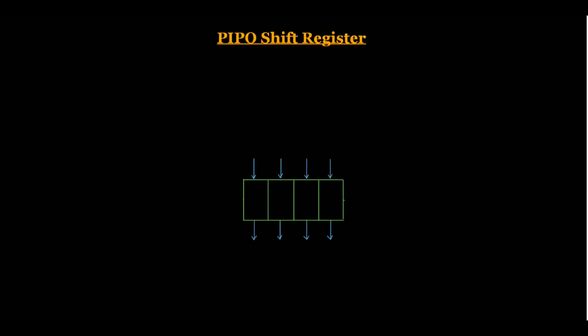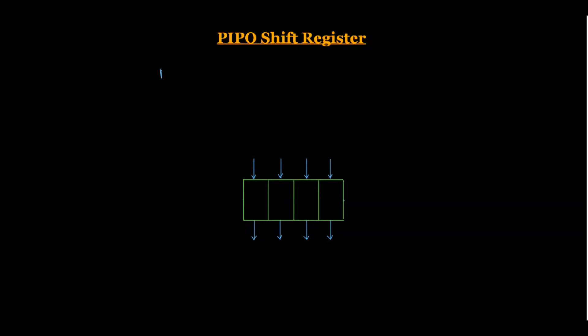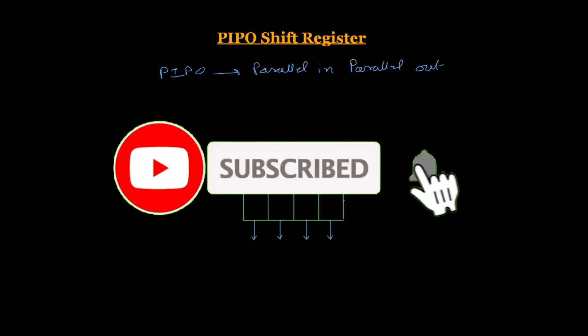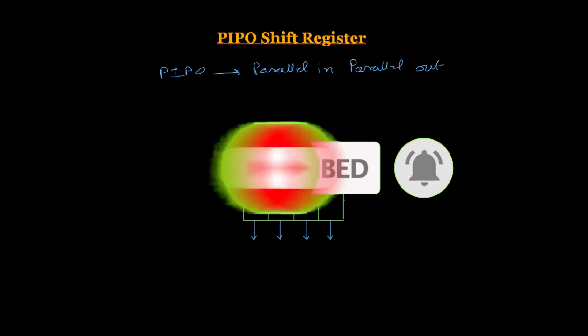Hello everyone. Today in this video lecture we will discuss another mode of a shift register, and that is the PIPO shift register. The full form of PIPO is Parallel In, Parallel Out. This means our data will be entered in a parallel fashion and we read the data in a parallel fashion.